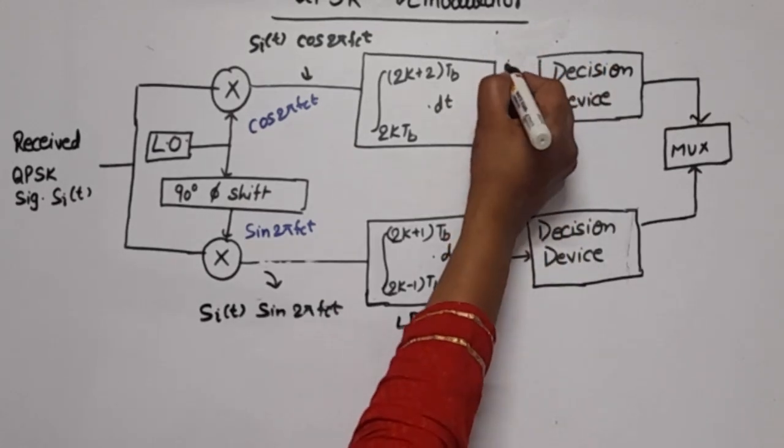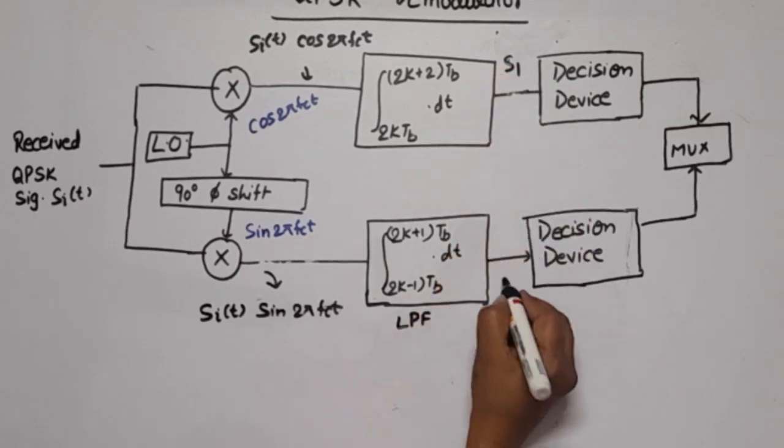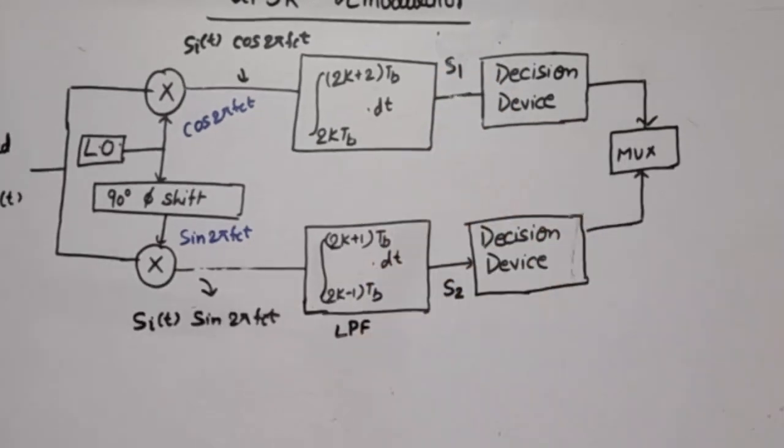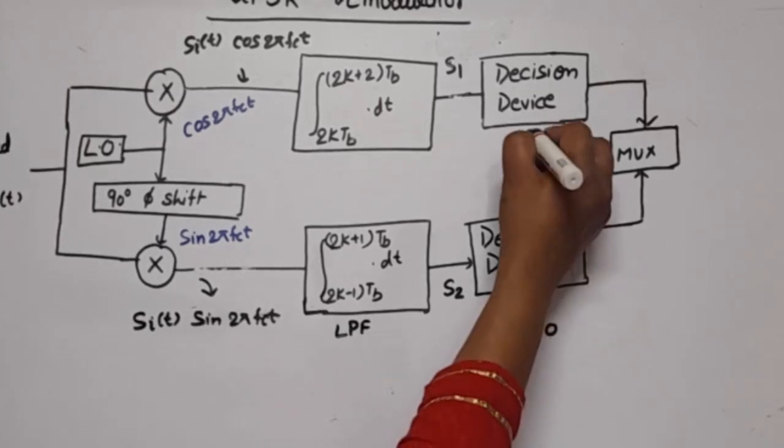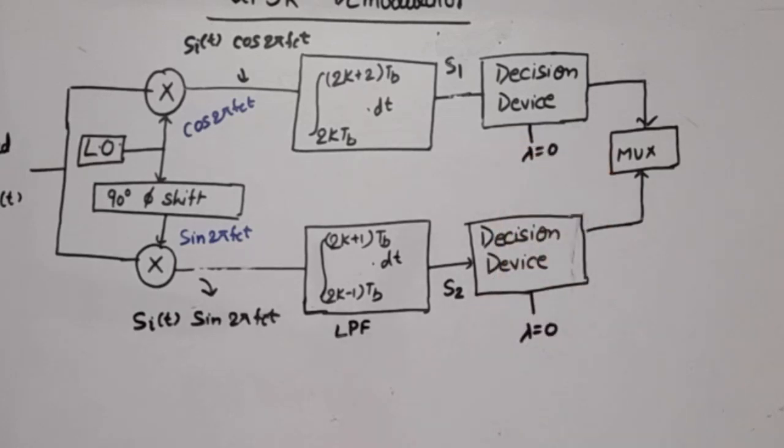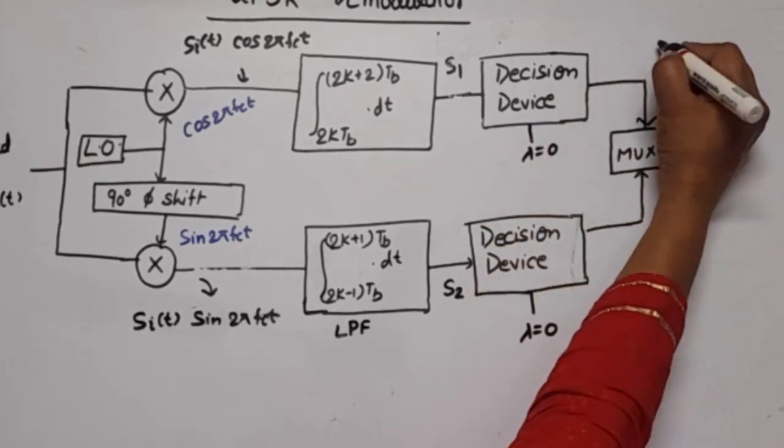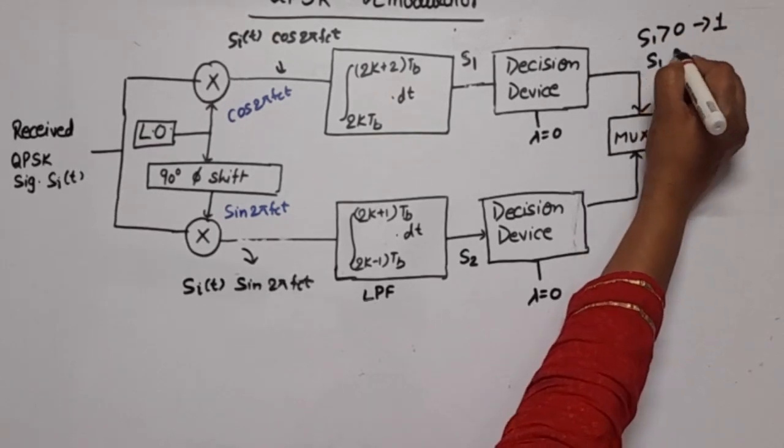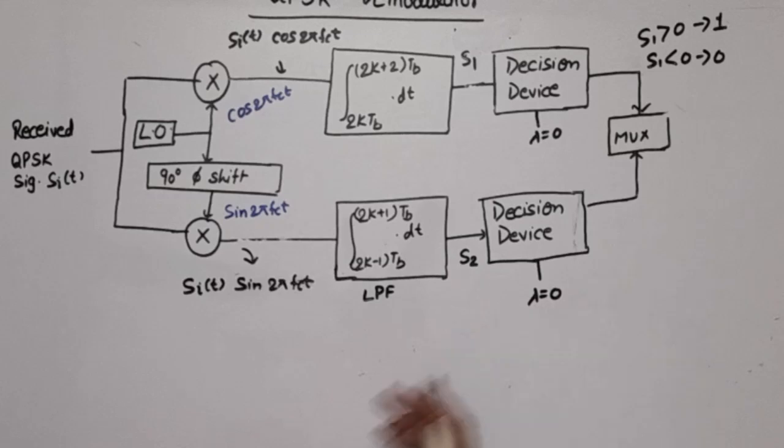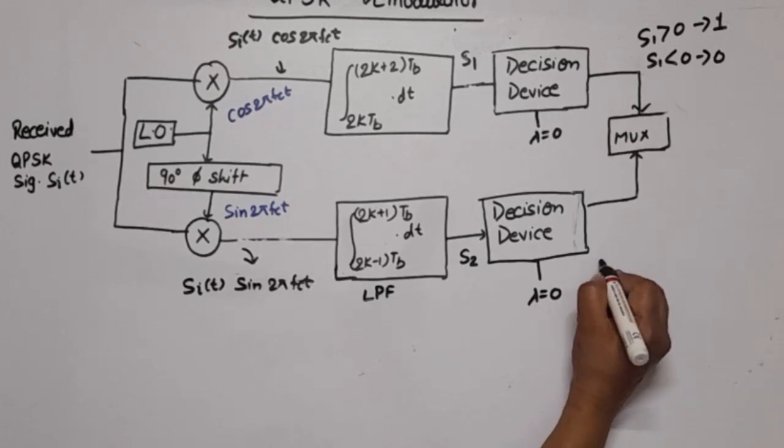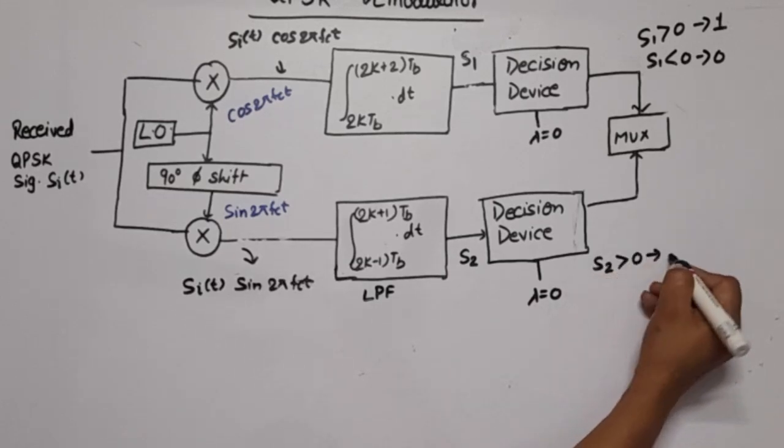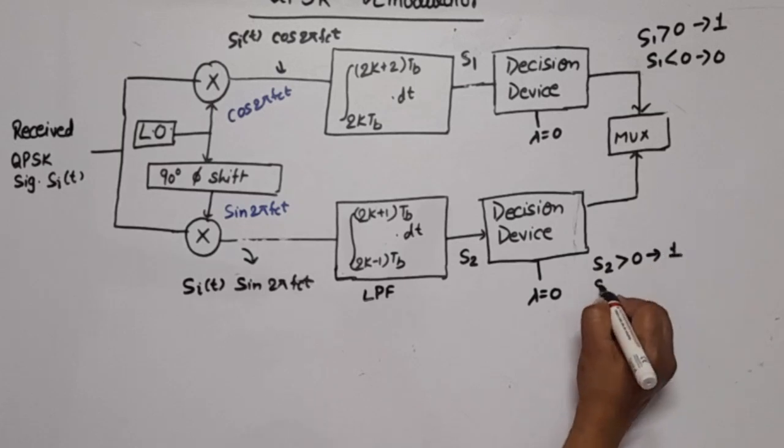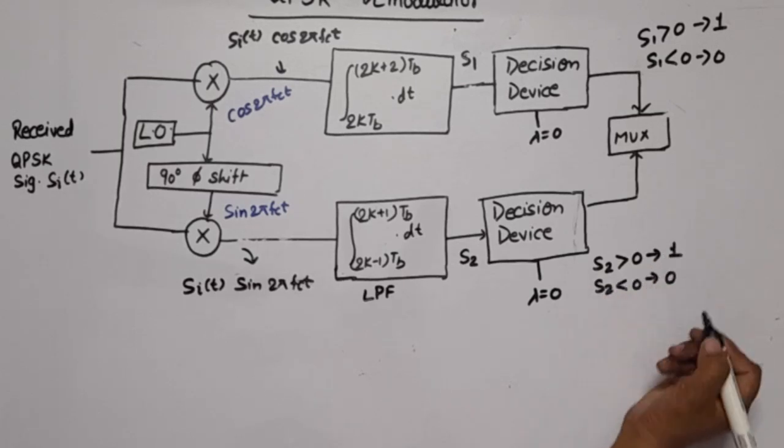The output of the low pass filters are s1 and s2. These outputs are applied to decision devices. The decision device has a threshold value of zero. If s1 is greater than zero, the result will be 1; if s1 is less than zero, the result will be 0. Similarly, if s2 is greater than zero, we have received 1; if s2 is less than zero, we received 0.